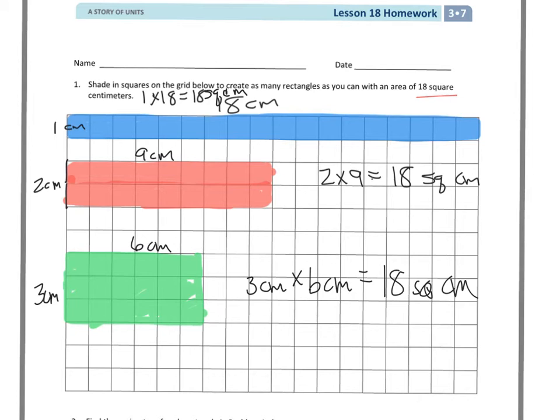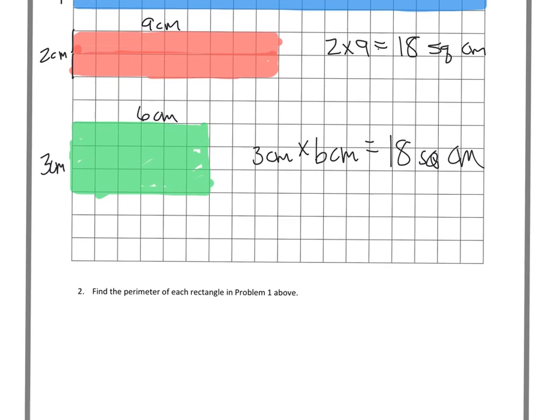So now let's take a look at the bottom. Find the perimeter of each rectangle in problem 1 above. So now I'm just trying to figure this out. And I have 1, 2, 3, 4, 5, 6. I know that that's 6, and I know that that's 3 because opposite sides of a rectangle are equal.